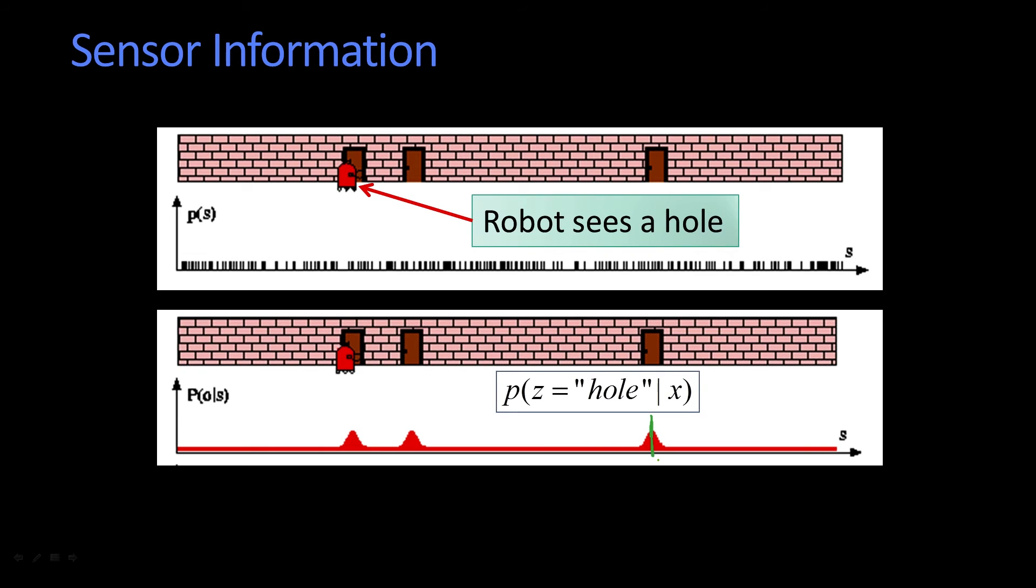So the reason that it's highest in the middle is because even if I've got a wiggly stick over here, the likelihood that I see a hole is higher than if I'm sort of at the edge of the hole. Because then I might sometimes run into the wall, sometimes run into the hole.